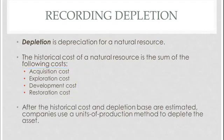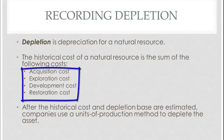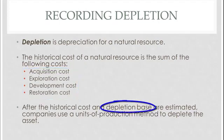The next issue is I'm kind of stuck with the way I can deplete a natural resource. Straight line really doesn't make any sense. Sum of the digits, double declining — none of those really make sense. What makes sense is units of production, and so that's what I'm stuck using. I'm going to extract these minerals, and for each mineral that I extract, I'm going to record so much depletion. So we get a historical cost from adding up these four components. We get a salvage value if we have the right to resell this to somebody else at the end. We get a depletion base, and then we use a units of production method to deplete the asset.